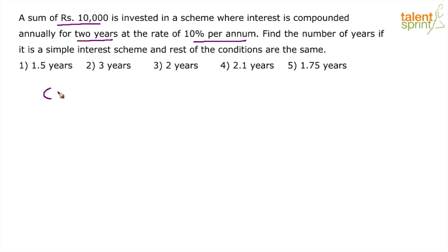So what will be the compound interest? See, 10% is for two years. So 10 plus 10. You don't have to write this on paper, by the way. You know that 10% for two years will give you how much? 21%. 21% of what? The principal amount, 10,000, which is 2,100.